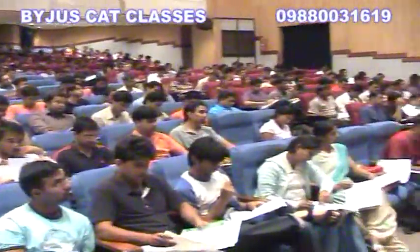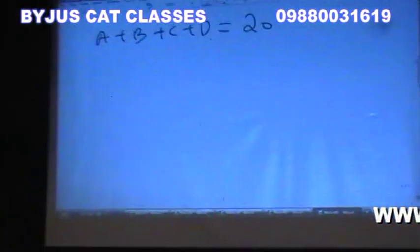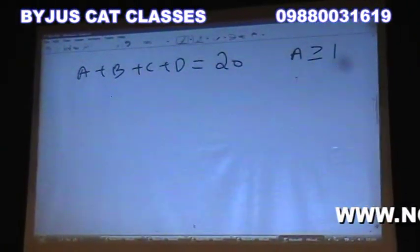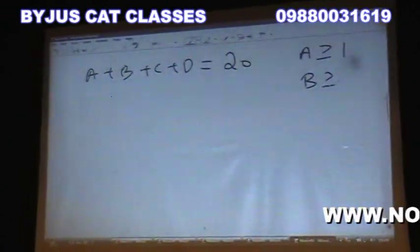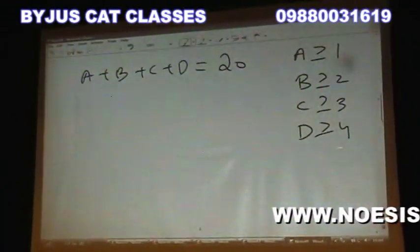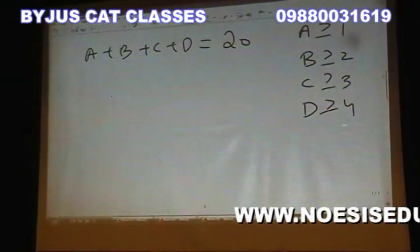A person must distribute 20 identical objects to 4 persons: A, B, C, and D. A should get at least 1, B should get at least 2, C should get at least 3, and D should get at least 4. This is a classic lower-limit question, and almost all of you can get the answer without much trouble.